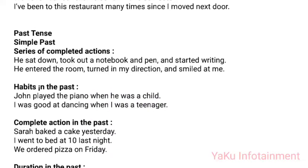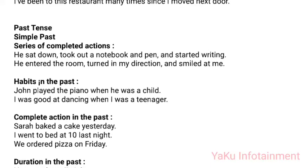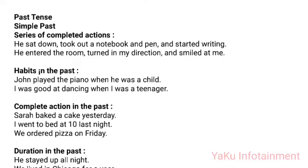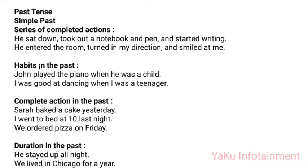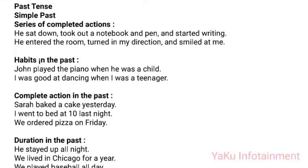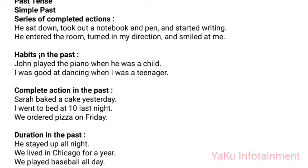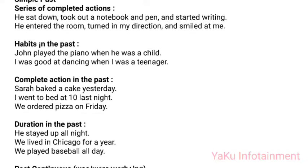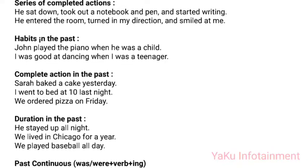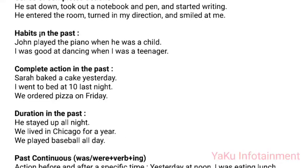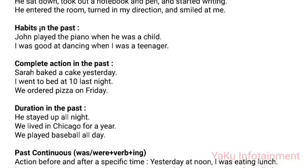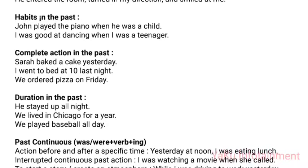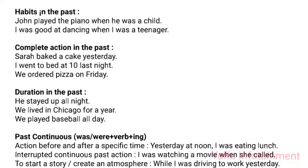Past Tense — Simple Past. Uses: (1) Series of completed actions: 'He sat down, took out a notebook and pen, and started writing.' (2) Habits in the past: 'John played the piano when he was a child,' 'I was good at dancing when I was a teenager.' (3) Complete action in the past: 'Sarah baked a cake yesterday,' 'I went to bed at 10 last night,' 'We ordered pizza on Friday.' (4) Duration in the past: 'He stayed up all night,' 'We lived in Chicago for a year,' 'We played baseball all day.'